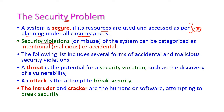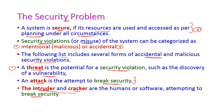Security violations or misuse of the system can be categorized as intentional misuse or accidental misuse. The following are several forms of accidental and malicious security violations. First, a threat is a potential security violation, such as the discovery of a vulnerability. Second, an attack is an attempt to break security. The persons who attempt this are called intruders or crackers, and they may be humans or software programs.